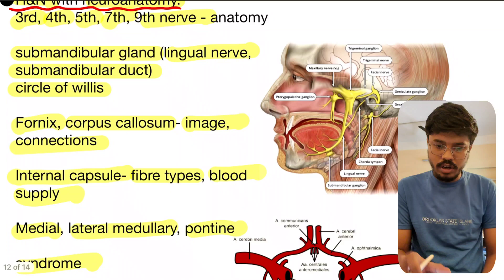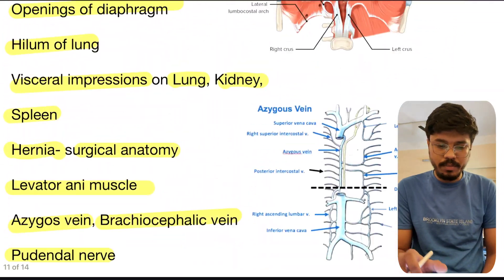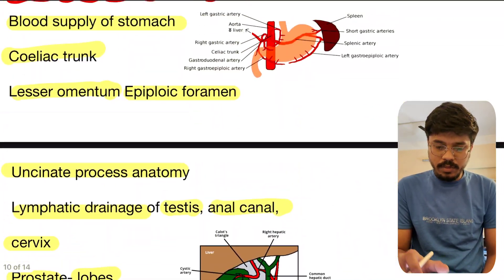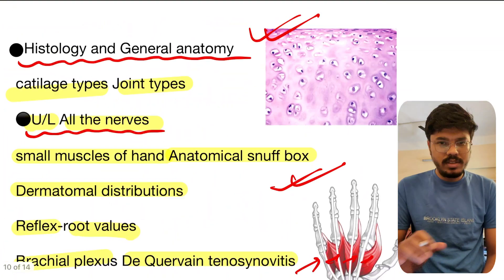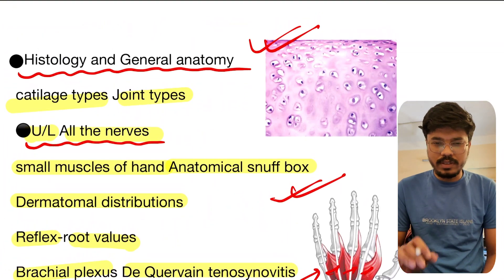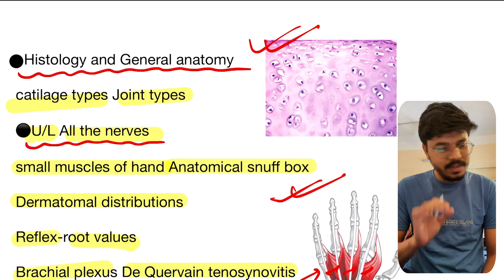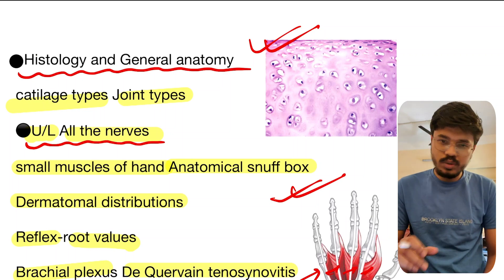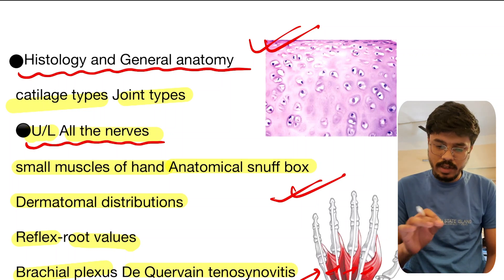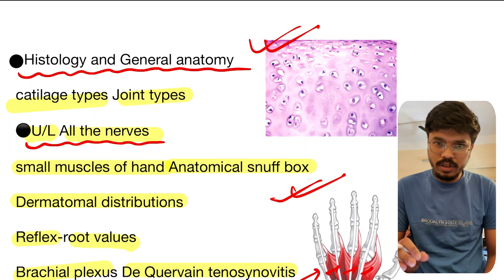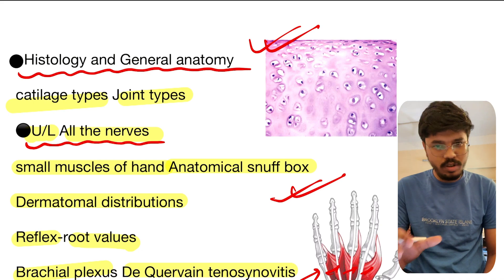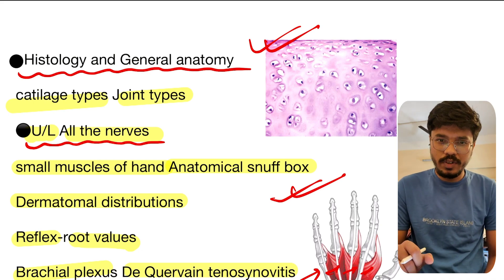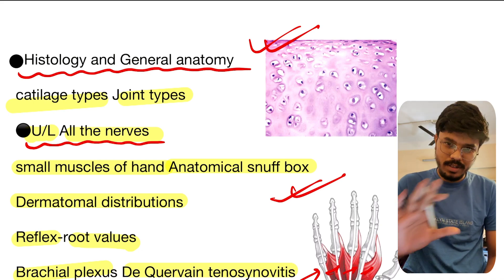This is a short list of all the important topics of anatomy — these are must-do topics. You cannot skip a single topic from this list. Check whether you have covered these topics or not; if not, please cover them. All the best, see you in the next video.